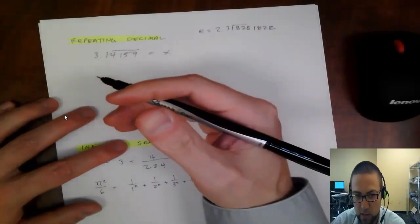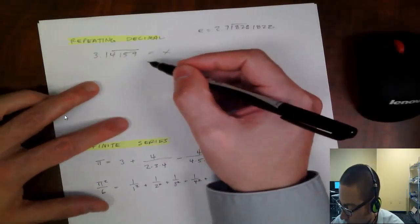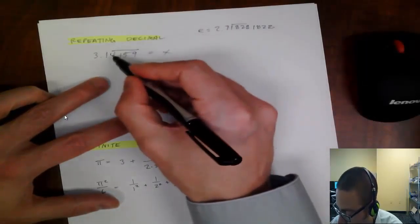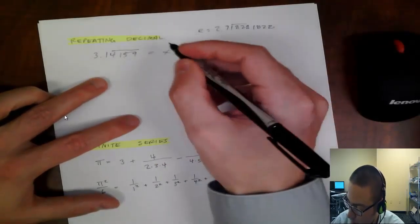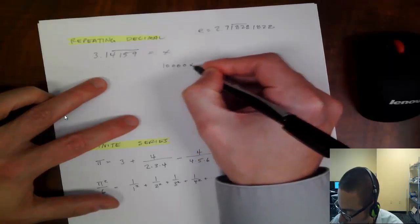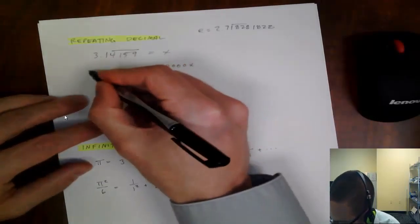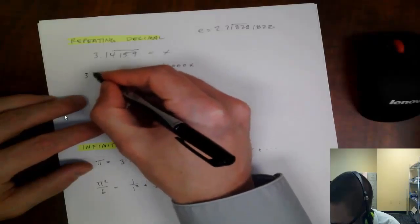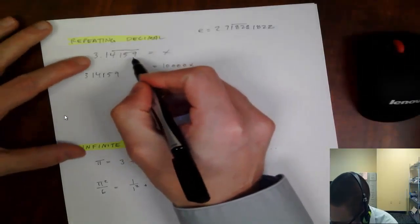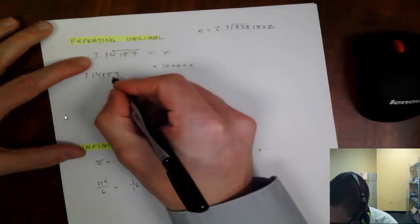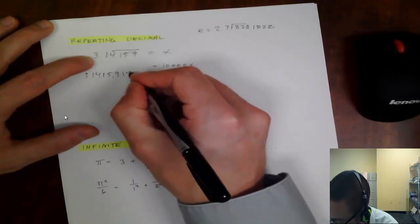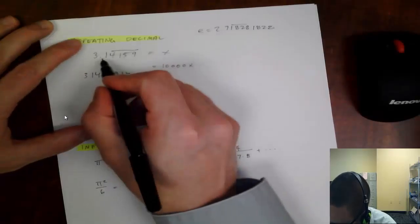So if I multiply, let's see, how many things are repeating? Four, so I'm going to multiply by one with four zeros, so that's 10,000. So, 10,000 x equals, and I'm going to move, three, one, four, one, five, nine. And then, so I'm moving the decimal over four spots, so it's going to be right there. And then, I repeat, one, four. Right. One, two, three. One, two, three, four.